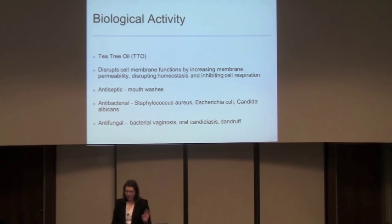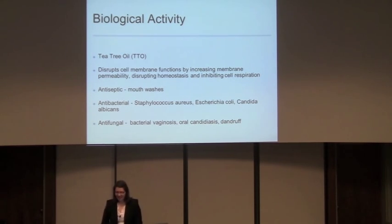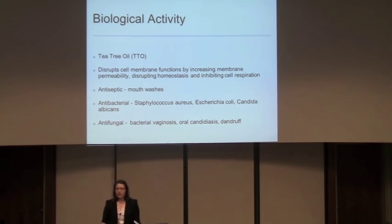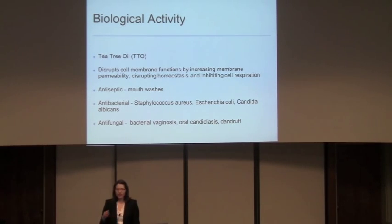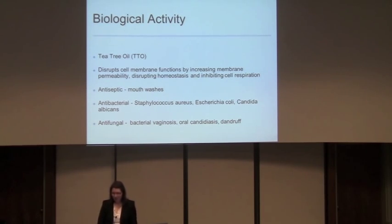As an antifungal, it's been used against bacterial vaginosis — which is actually a fungal growth within the vagina, sometimes confused with a yeast infection but distinct from it. They found a very low-cost treatment by creating a gelatin with just a few drops of tea tree oil, which was able to clear it within six days. It's also been used for oral candidiasis — a fungal growth on the tongue and mucous membranes of the mouth — and for dandruff. It's able to not only control the infection but also eliminate the fungal growth.